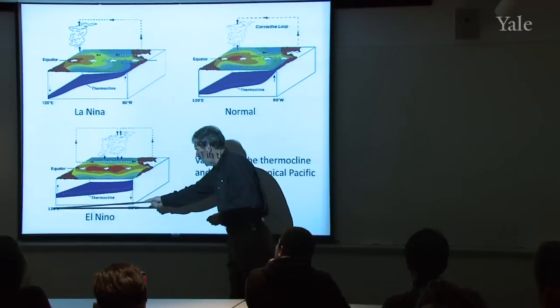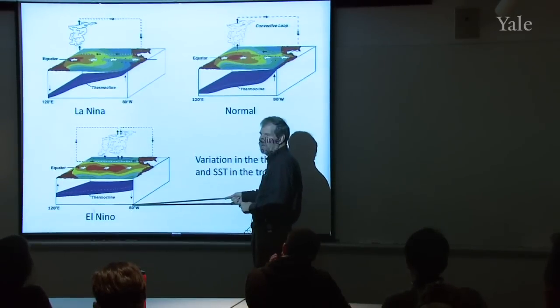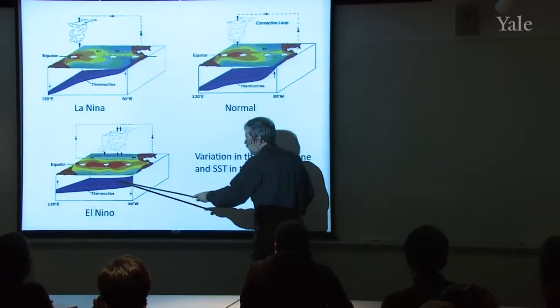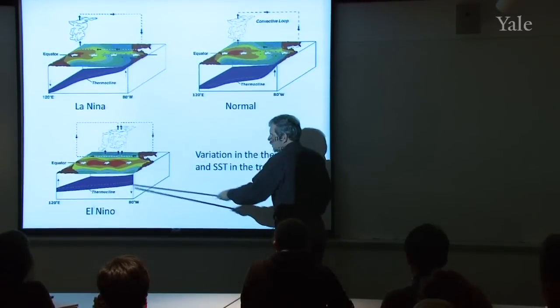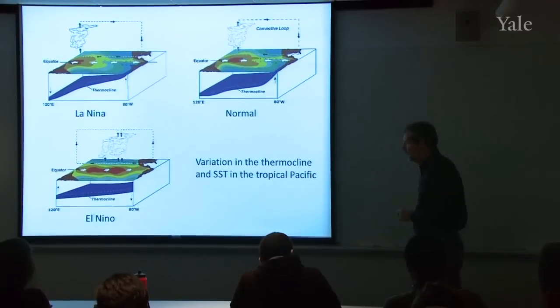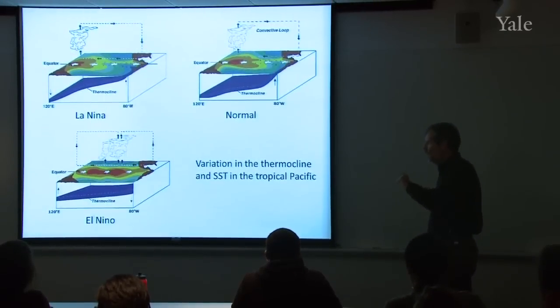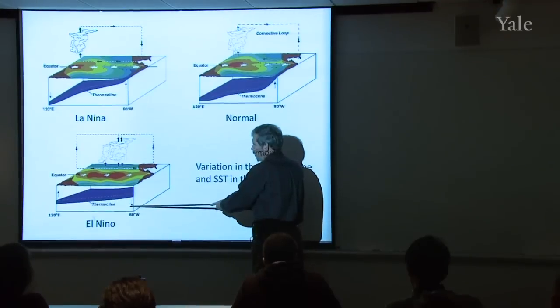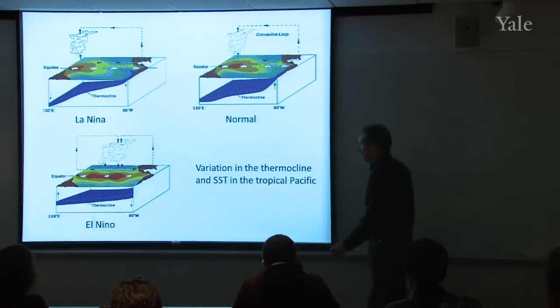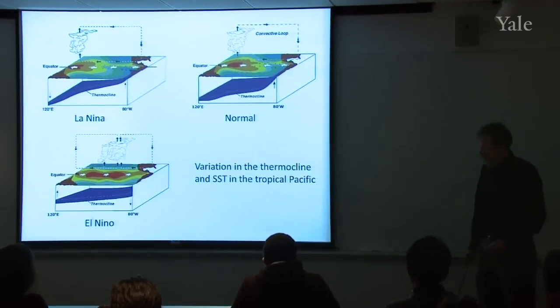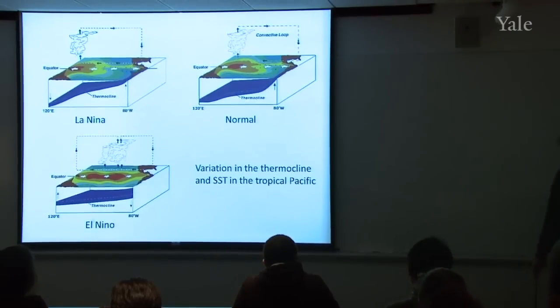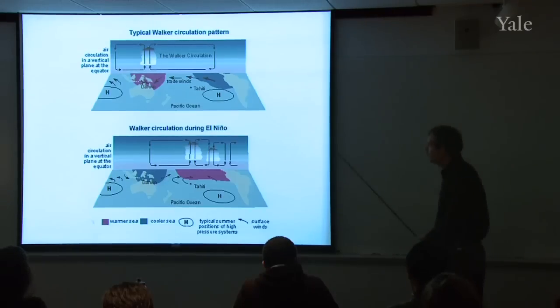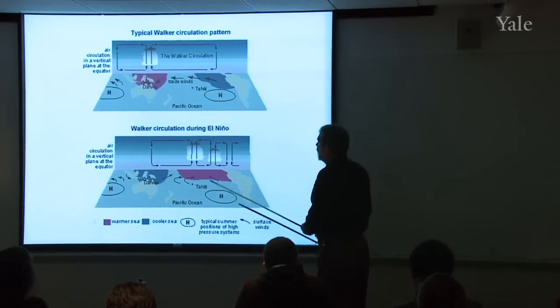Remember, the dateline is in here. So this is 120 east, and this is 80 degrees west. The dateline is somewhere in there. But this means you've got a big, deep layer of warm water near the eastern part of the tropical Pacific, preventing efficient mixing of nutrient-rich waters to the surface. So that's the way we envision this today, after 30 or 40 years of study.